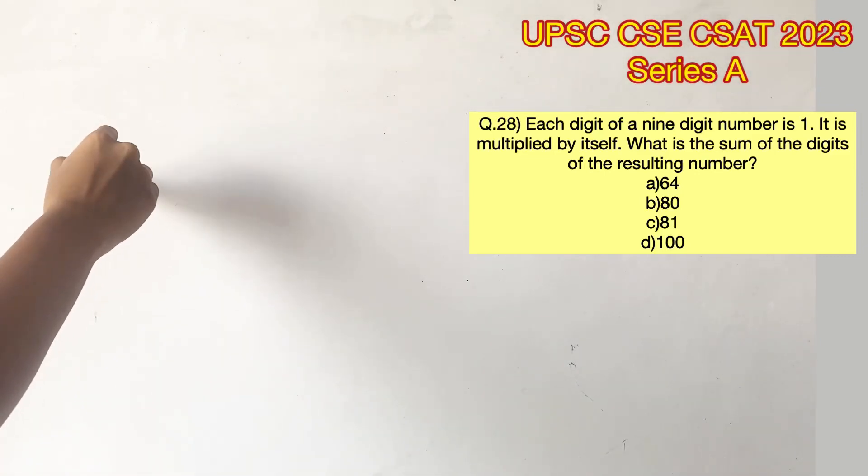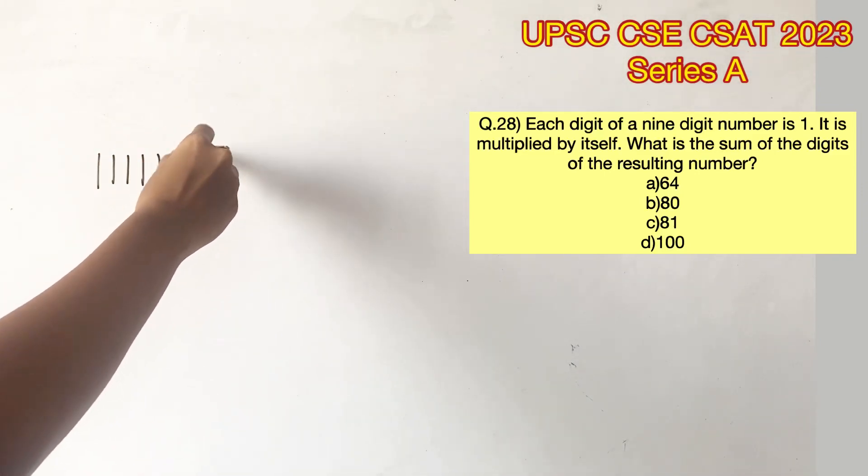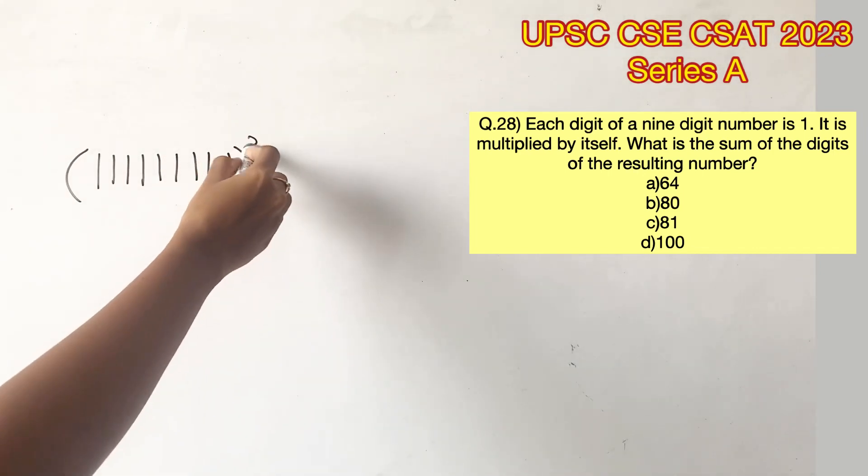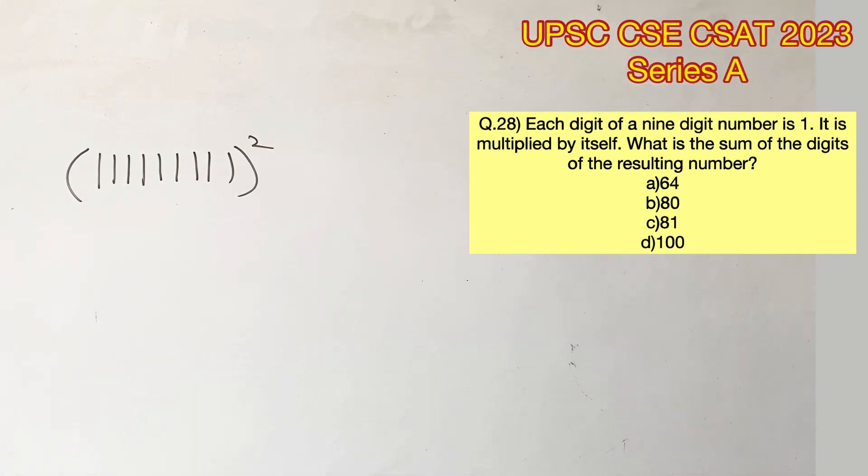Welcome to Aptitude Destination. Please pause the video and read the question completely. Each digit of a 9-digit number is 1, so 1 has to be written 9 times. It is multiplied by itself. We are supposed to find the sum of the digits of the resulting number.